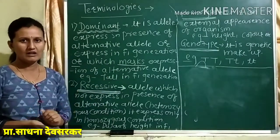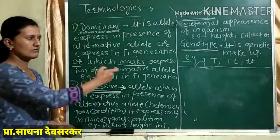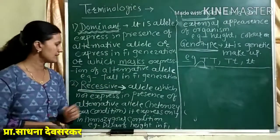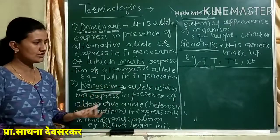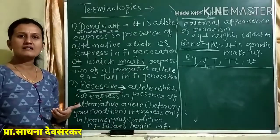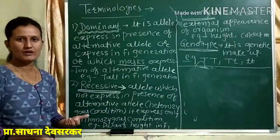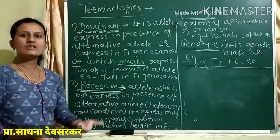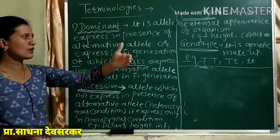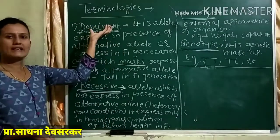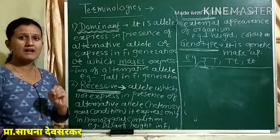Considering the pea plant only for examples. Just as tallness of pea plant is expressed in F1 generation, again the round shape of seed in F1 generation is dominant. Then the green colour of the pod, the yellow colour of seed, the axial position of flower, and the purple colour of flower — all are dominant characters. At home, write down the definition and collect more examples from the pea plant.